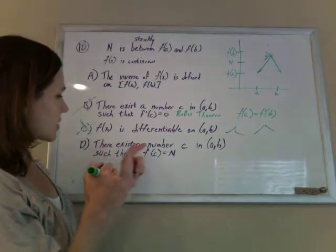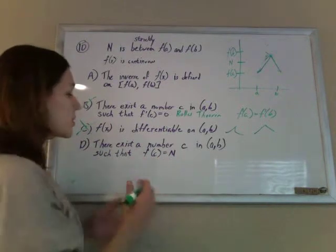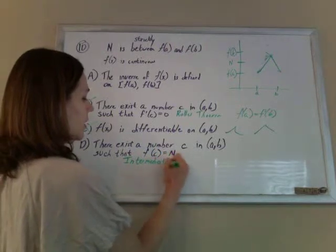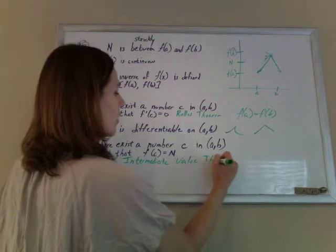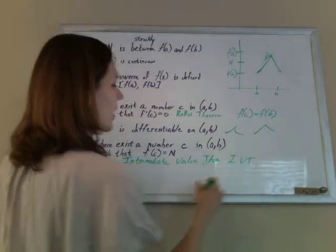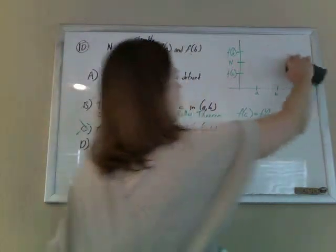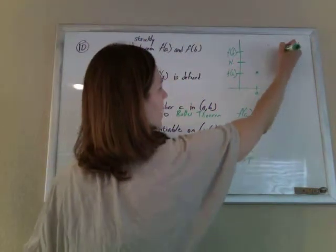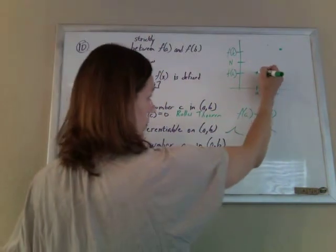Here, there exists a number c on a, b such that f of c equals n. Now, this rings bells as well. This is our intermediate value theorem. Intermediate value theorem, or IVT for short. And I think this is it man, because if I have to get from f of a to f of b, and my function has to be continuous, I'm not allowed to pick up my pen,